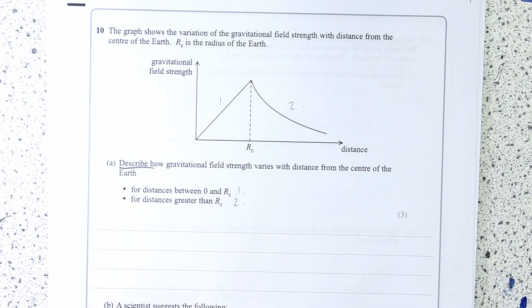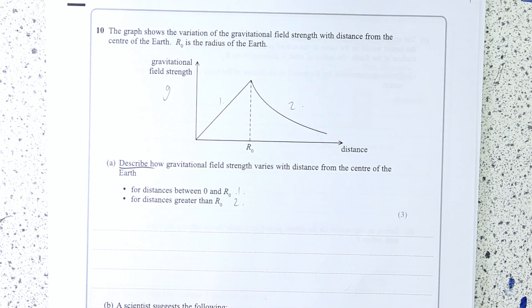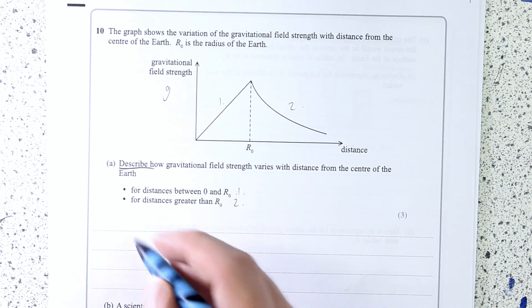Okay, well, I can see up until R₀ then g, gravitational field strength, is proportional to distance.